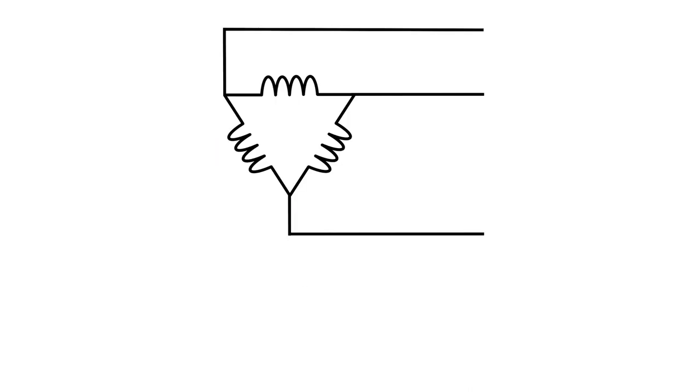So here we have, starting out with our basic delta configuration, here we have our three windings that are all 120 degrees out of phase. Notice that there is no ground point at all on this. You can have a grounded corner point, but we are not going to discuss that, or you can ground a center tap here, again that is another discussion for another video.